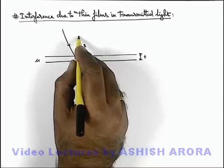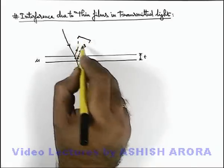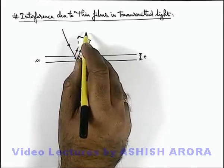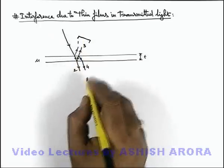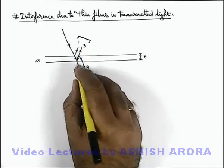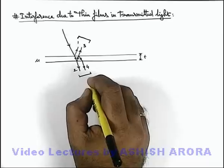In the previous section we have studied about the interference effect of these two light beams which will constitute the reflected beam of light. Similarly, in the transmitted beam here, these light beams 2 and 4 will constitute the transmitted beam.